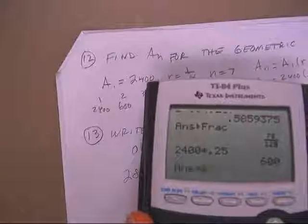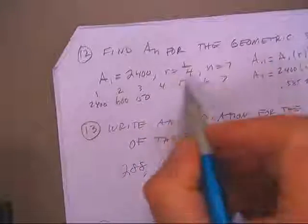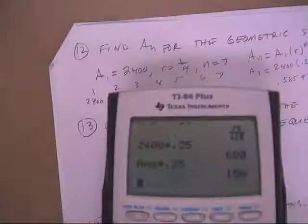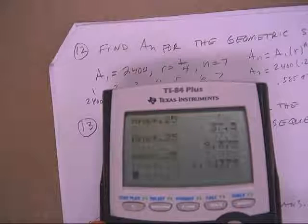Second times a quarter. There's the third term. 1, 2, 3, 4. Punch enter 4 more times. 1, 2, 3, 4.